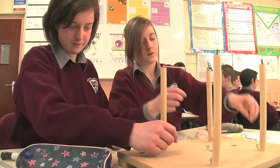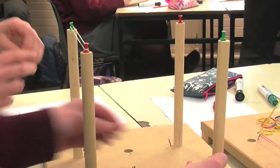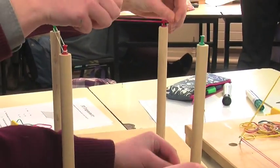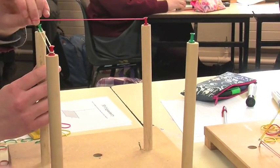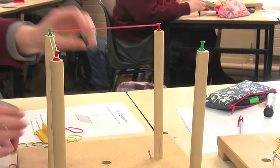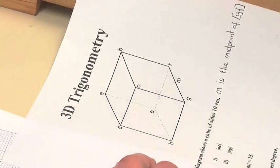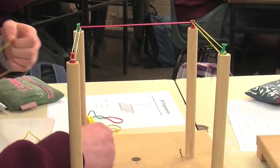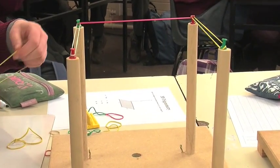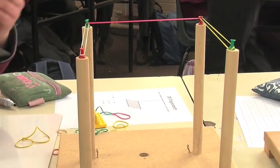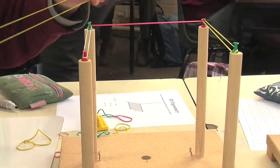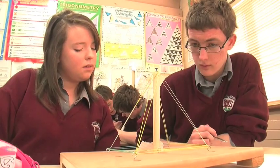Some of the class got pyramids and some of us got cubes. We got a cube, so we had to build it using the poles, boards, and elastic bands. From that we had to find different measurements — like the diagonals — so we were kind of breaking it down into triangles and different things like that.